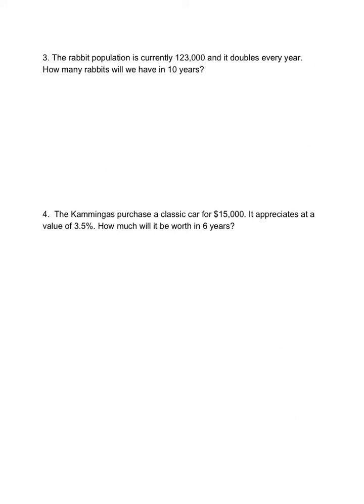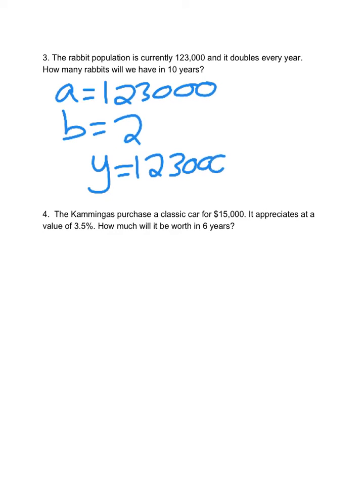Take a look at the next ones here. We have a rabbit population, so A equals 123,000. It's doubling, so B is going to be 2. I will have Y equals 123,000 times 2 to the X. And now X is 10, so I can replace X with 10.